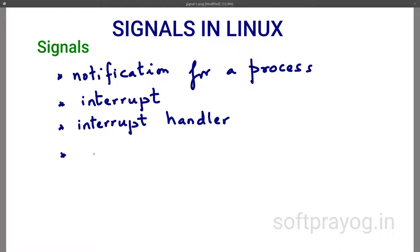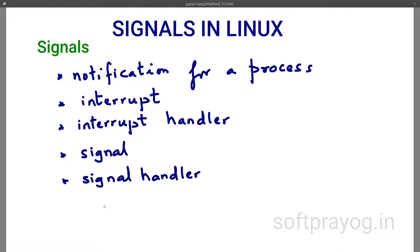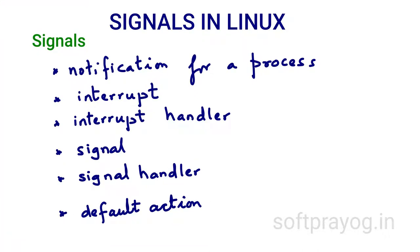When an interrupt is received, the processing is suspended and the relevant interrupt handler is executed. Similarly, when a signal is received and a signal handler is installed for that signal, processing is stopped and the signal handler is executed. If there is no signal handler installed for the received signal, the default action for that signal is executed, which is often to terminate the process.